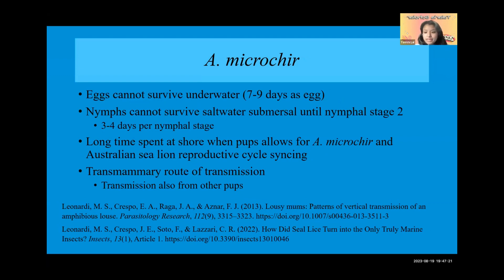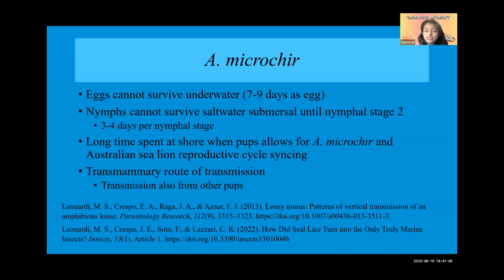Eggs can only be laid on land — they cannot get wet or they will die. They spend around seven to nine days as an egg, with three to four days in each nymphal stage, taking about one month in total to grow up. The long time that Australian sea lion pups spend ashore allows the breeding cycles of A. microchir to synchronize with those of the Australian sea lion.